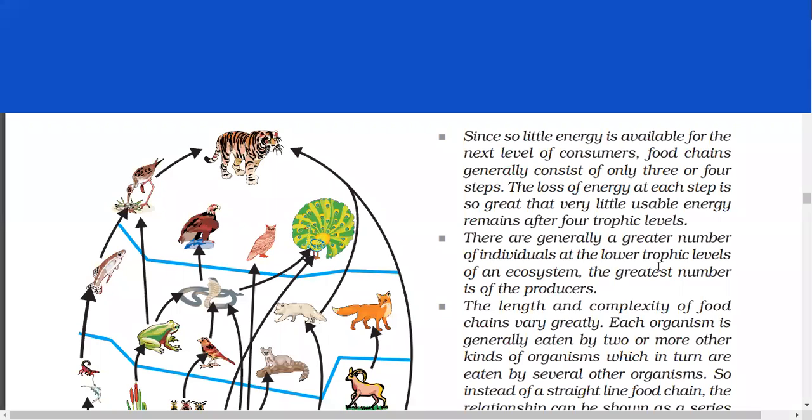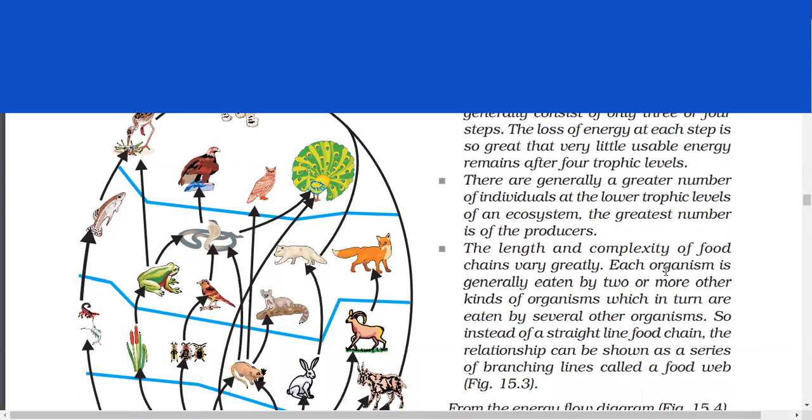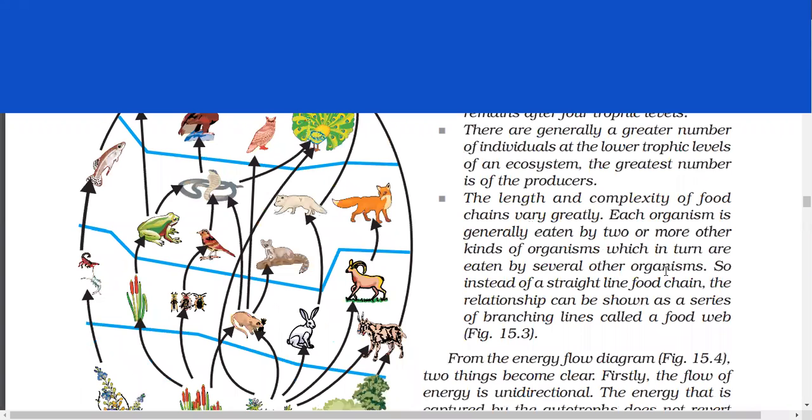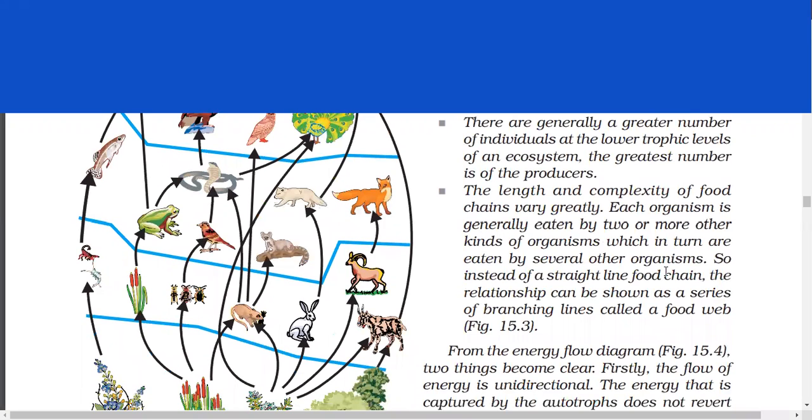Since so little energy is available for the next level of consumers, food chains generally consist of only 3 or 4 steps. The loss of energy at each step is so great that very little usable energy remains after 4 trophic levels. There are generally a greater number of individuals at the lower trophic levels of an ecosystem. The greatest number is of the producers. The length and complexity of food chains vary greatly.